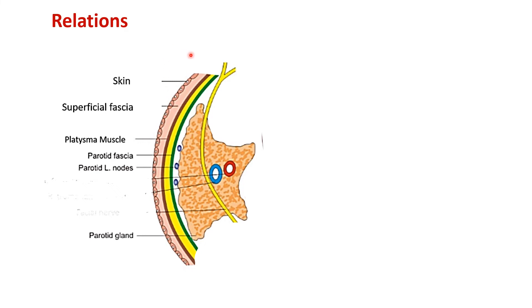To summarize the relations of the superficial surface: skin, superficial fascia containing the anterior branch of the great auricular nerve, the superficial parotid lymph nodes, and the platysma muscle. Deep to the superficial fascia, we have the deep fascia (parotid fascia, derived from the deep cervical fascia), and then the deep parotid group of lymph nodes.